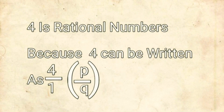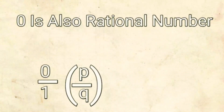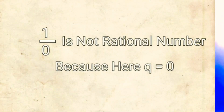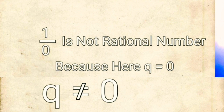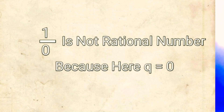Rational numbers can be negative. For example, 4 is a rational number because 4 can be written as 4/1, where p = 4 and q = 1. Similarly, 0 is also a rational number because it can be written as 0/1, where p = 0 and q = 1. But 1/0 is not a rational number because here q = 0, and q ≠ 0 is the necessary condition.